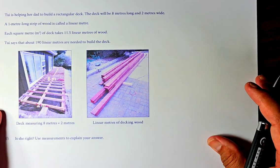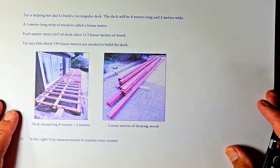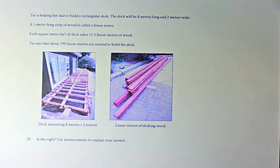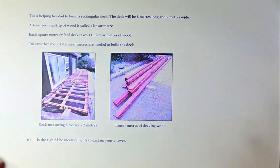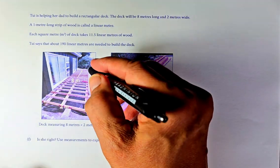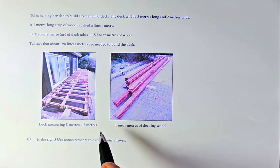Okay, so now we shall look at question 1F. And this will be outcome number 3. Okay, so we shall read the question together. Okay, the question reads like that. Tui is helping her dad build a rectangular deck. Okay, the deck will be 8 meters long. So, it will be 8 meters long and 2 meters wide.